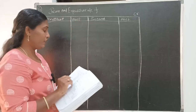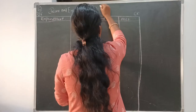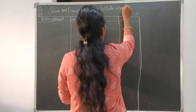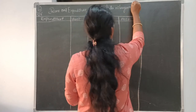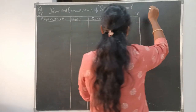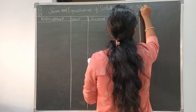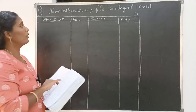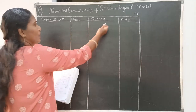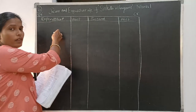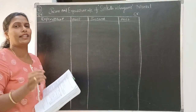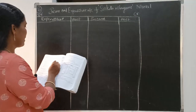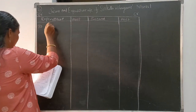So income and expenditure account of Sri Kala Nilayam, Nirmal. This is the format — expenditure on the left (debit) side and income on the right (credit) side, according to the nominal account rule. Expenditure will show on the debit side and income on the credit side. Let us start with the expenditure. The first expenditure is salaries.